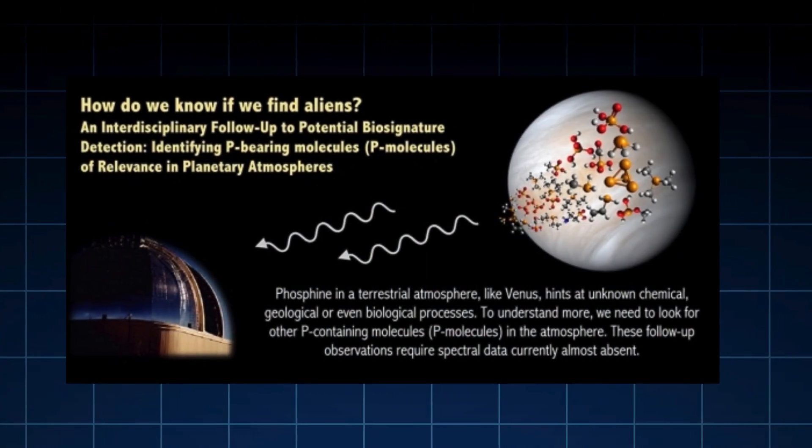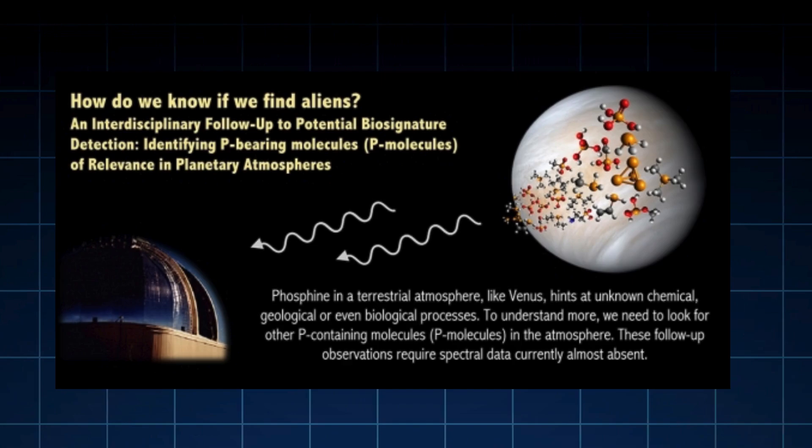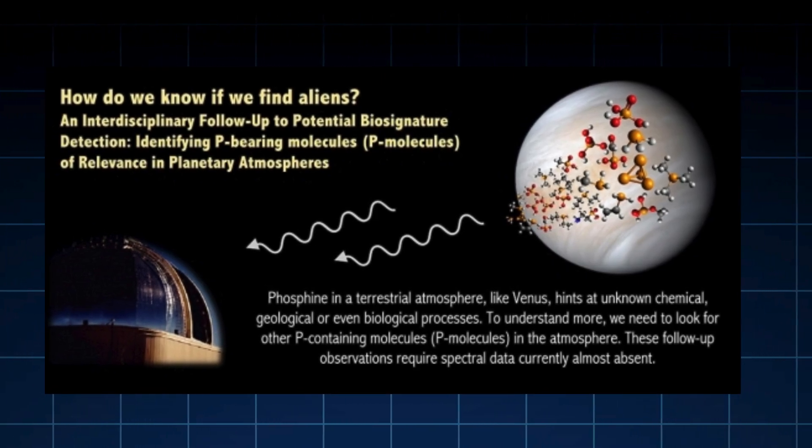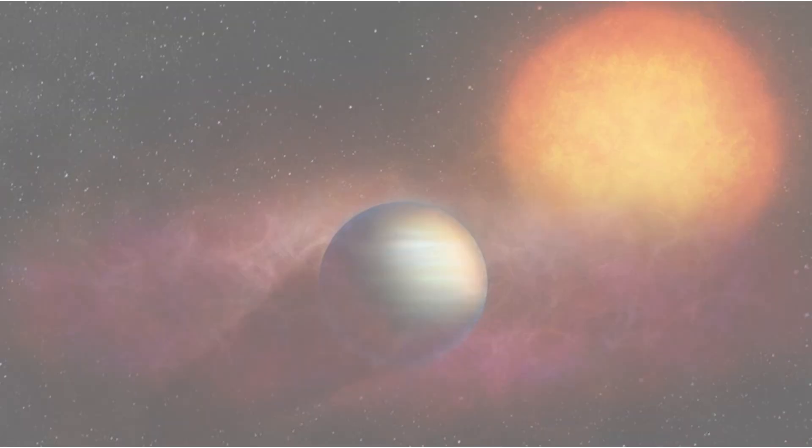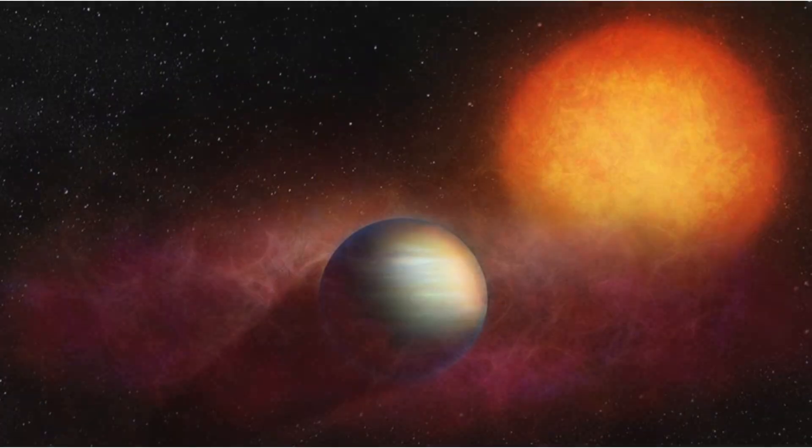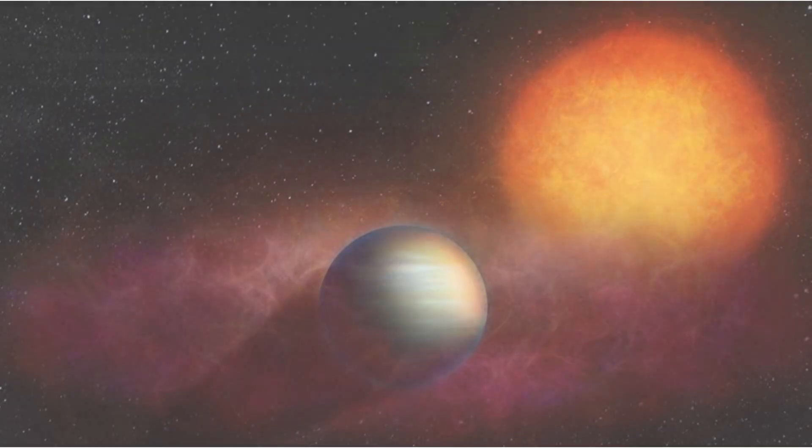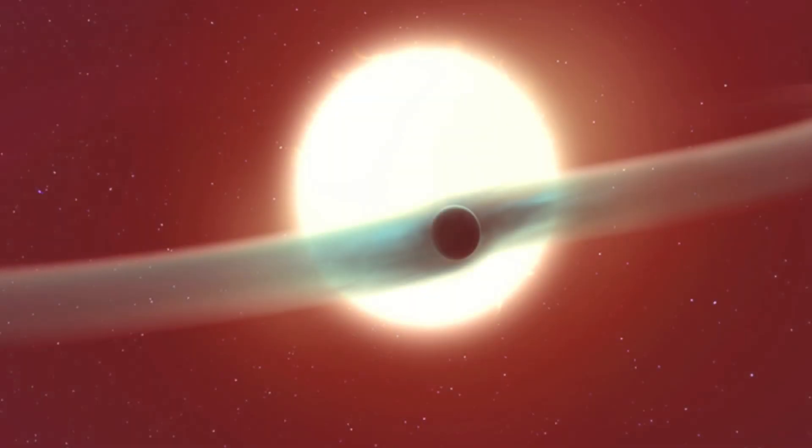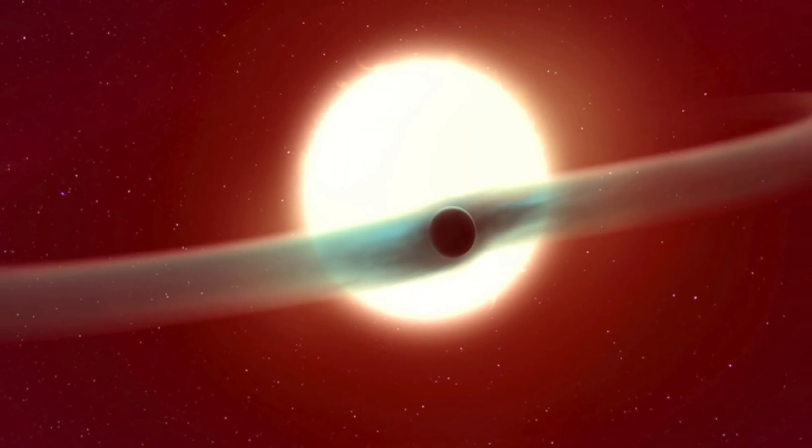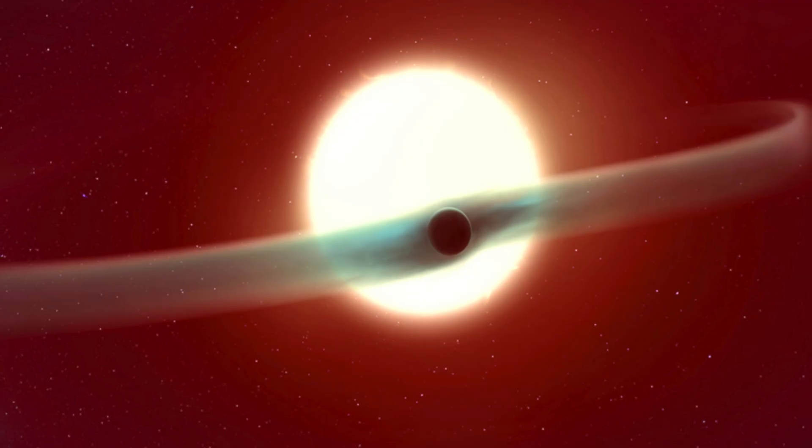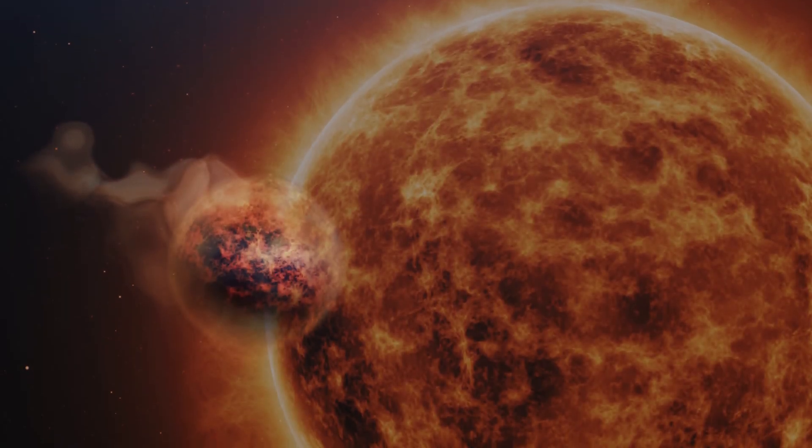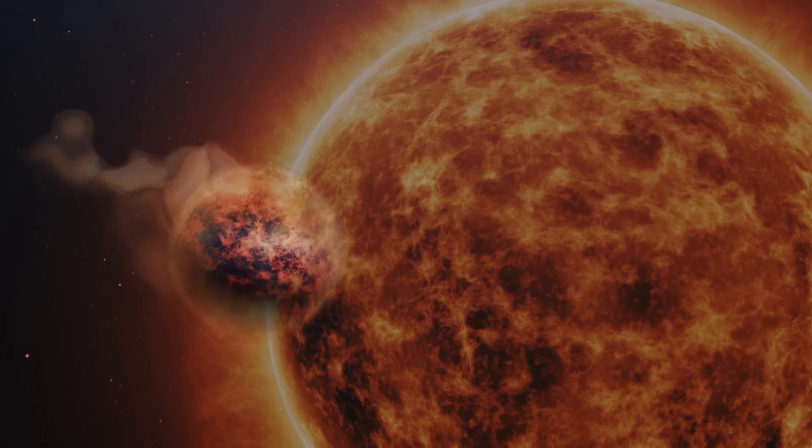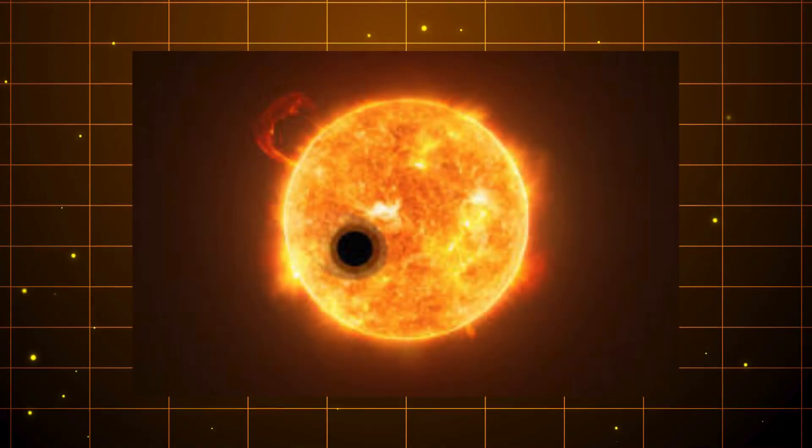Webb's insights deepen with inflated giants that refuse to deflate. WASP-107b, a low-density world, reveals enormous streams of helium escaping into space, forming tails that stretch across its orbit. Yet despite this dramatic loss, the atmosphere remains puffy and extended, driven by internal heat or migration histories we are only beginning to unravel.